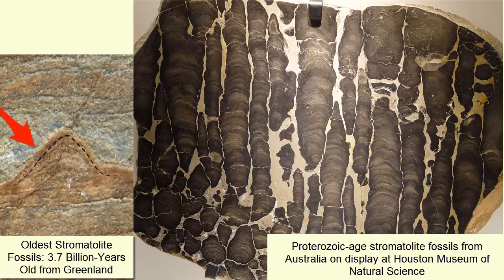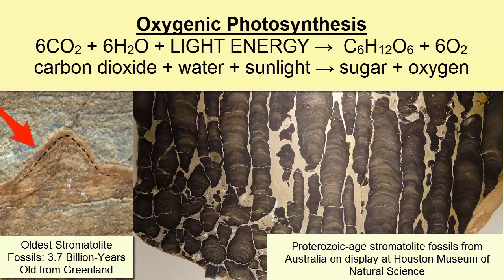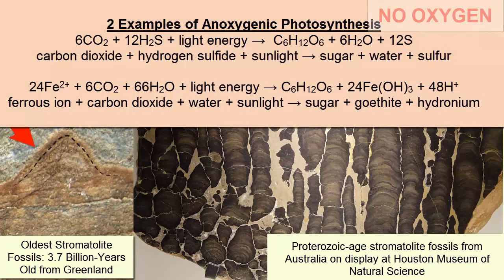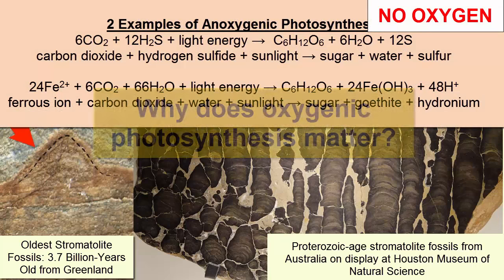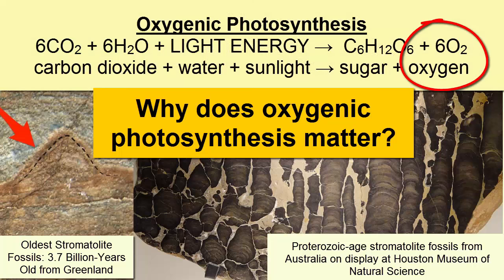This image shows what fossilized stromatolite mounds look like. Today, photosynthesis is primarily oxygenic, producing oxygen as a waste product. However, the earliest form of photosynthesis was not an oxygen-producing one. Why does the evolution of oxygenic photosynthesis matter? Advanced life can evolve only in the presence of large amounts of atmospheric oxygen, and oxygenic photosynthesis is the dominant natural process at work on Earth that produces that oxygen.